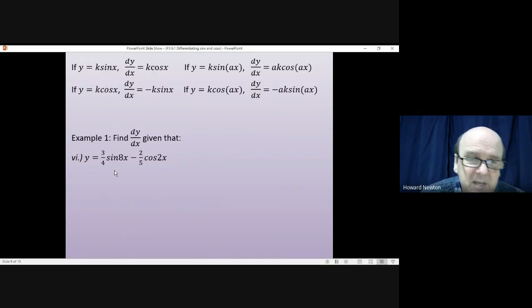Question six is the same idea. You've got fractions, so it's a little bit more awkward, but you do it in the same way. Differentiating sine 8x gives you cos 8x, and then you'll have to times this fraction by 8. Differentiating minus cos 2x gives you plus sine 2x, and then you'll have to multiply this fraction by 2. That gives you 24/4 times by the cosine of 8x plus 4/5 times by the sine of 2x. And 24/4 you can simplify, so the final answer would be dy/dx equals 6 cos 8x plus 4/5 times by the sine of 2x.